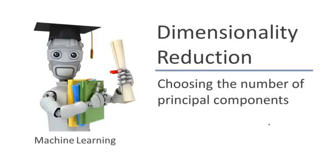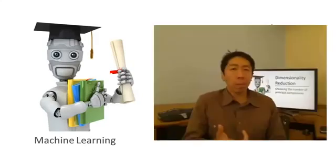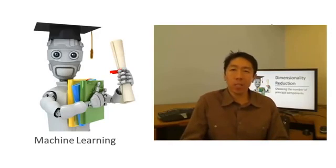In the PCA algorithm, we take n-dimensional features and reduce them to some k-dimensional feature representation. This number k is a parameter of the PCA algorithm, also called the number of principal components that we retain. In this video, I'd like to give you some guidelines about how people tend to think about how to choose this parameter k for PCA.